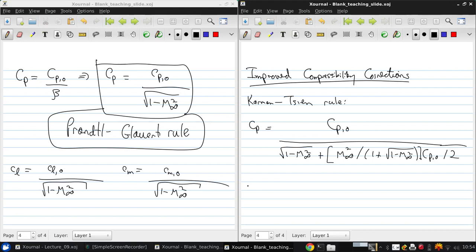And there's also Layton's rule which gives CP equal to CP0 over square root of 1 minus M infinity squared plus M infinity squared times 1 plus gamma minus 1 over 2 M infinity squared times 1 half times the square root of 1 minus M infinity squared all times CP0.